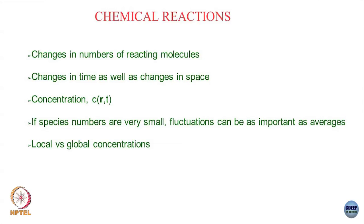We denote the relevant variable as concentration c, which is a function of space as well as time. When we talk about concentrations, what we are saying is that there are enough number of copies of that molecule such that fluctuations are relatively small. If there are only one or two copies, you cannot write down these equations — you then have to look at stochastic trajectories of these individual molecules in time and in space, and analyze the trajectories themselves. If the numbers are very small so that fluctuations overwhelm the averages, there are different methods to deal with that.